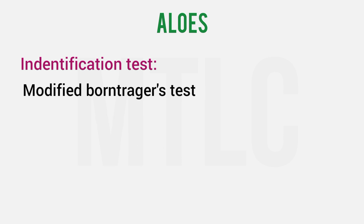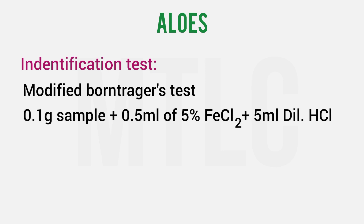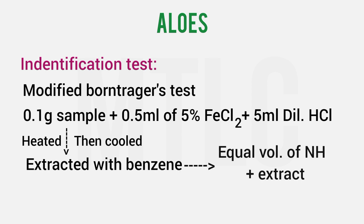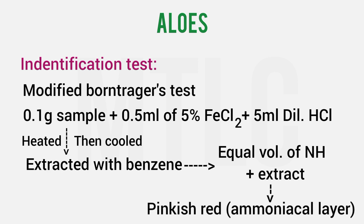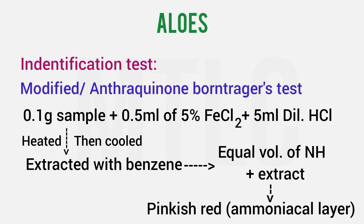The Modified Borntraeger's test is very important. Take 0.1 g of drug, add 5 ml of 5% ferric chloride and 5 ml of dilute hydrochloric acid. Heat, then cool. Extract with benzene. Add equal volume of ammonia to the benzene extract. The ammoniacal layer will form a pinkish-red color. This is the modified anthraquinone test, also called the Modified Borntraeger's test.